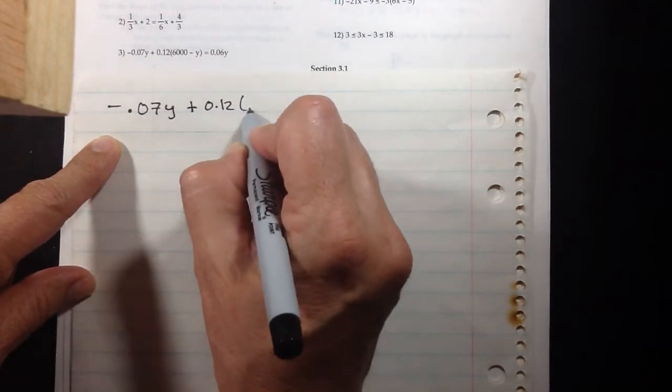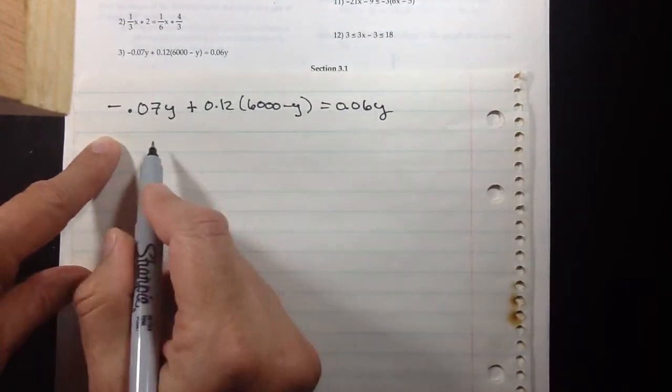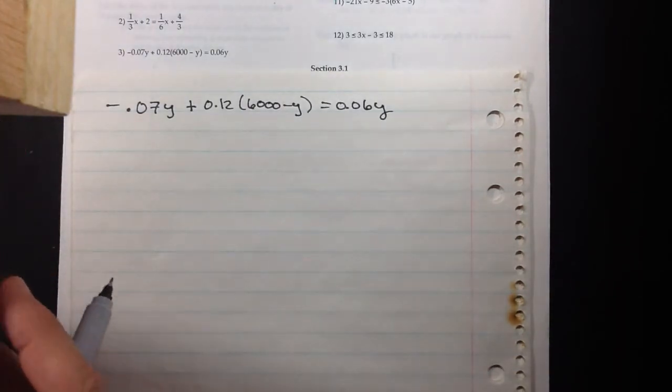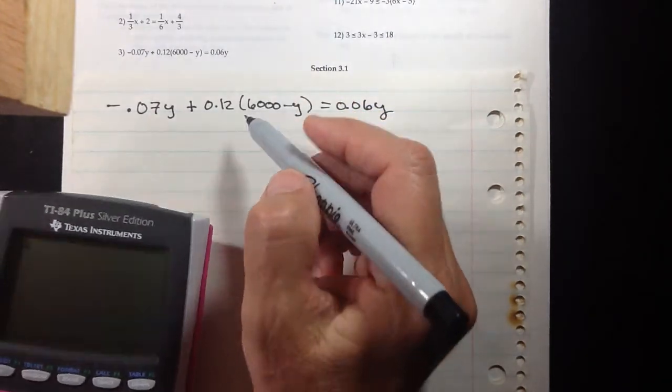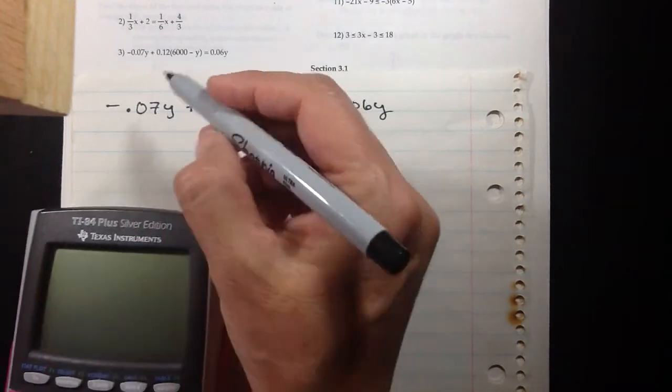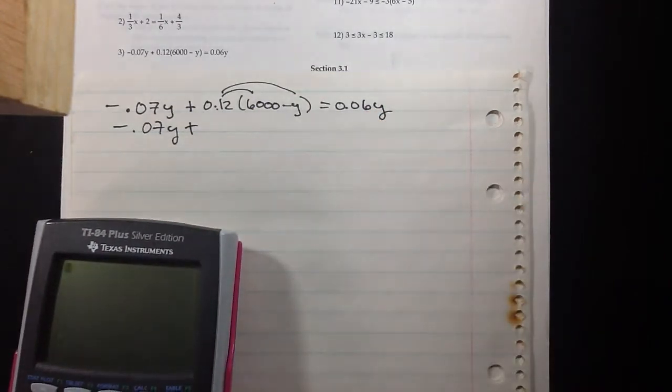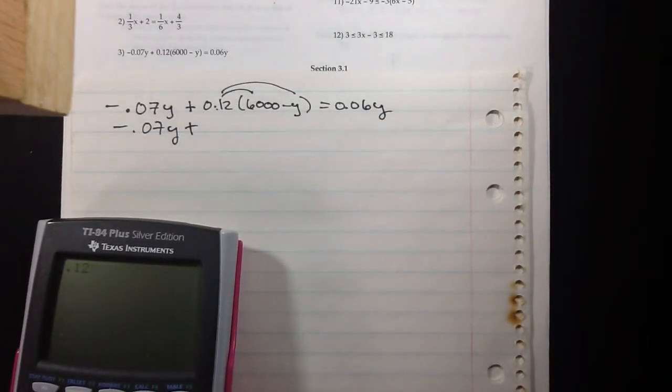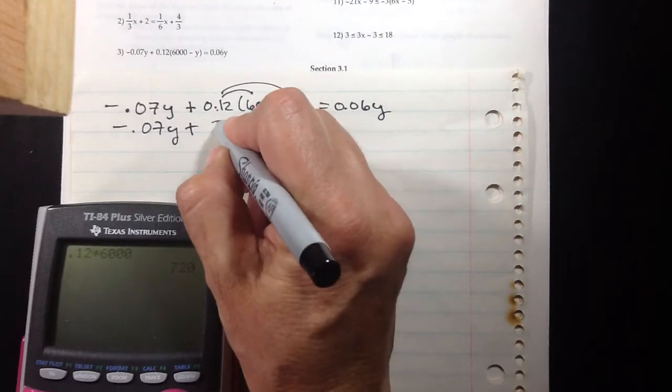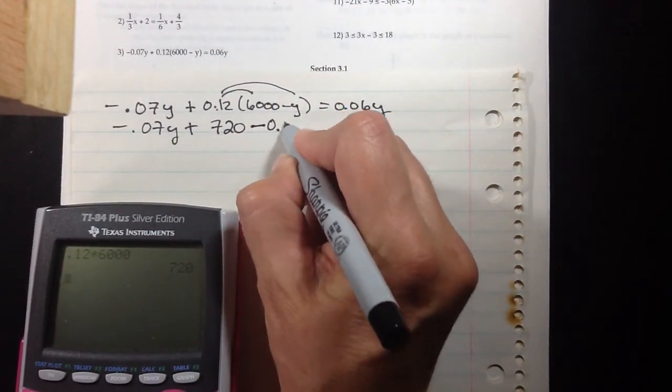But my preference is just leave the decimal—you get to use a calculator on this test—and just go ahead and do it as if this number were something easier to work with. We just leave the negative 0.07y plus positive times positive is going to be positive, and you can just use your calculator to do 0.12 times 6,000, and that is 720.